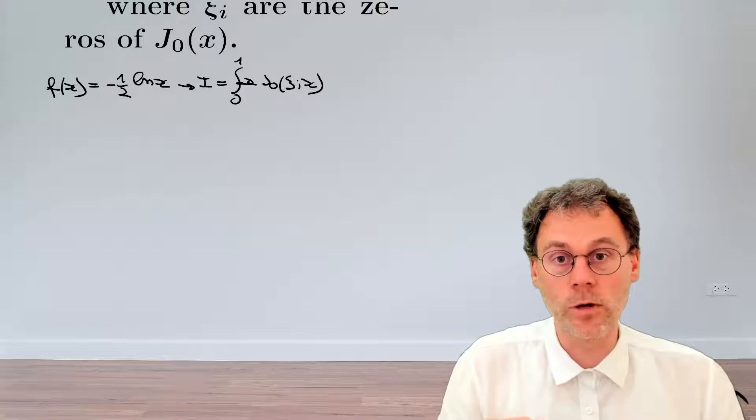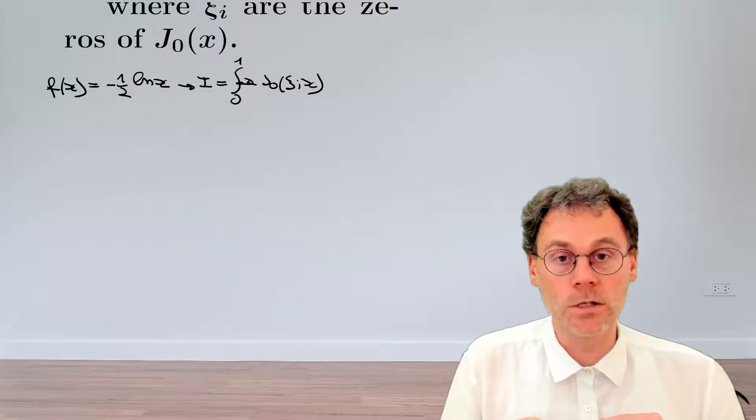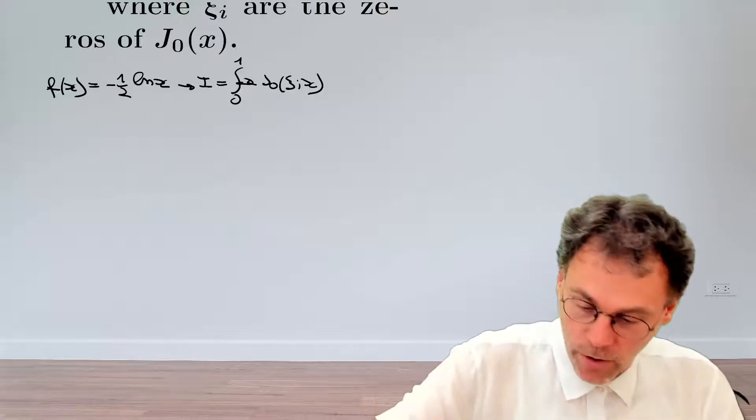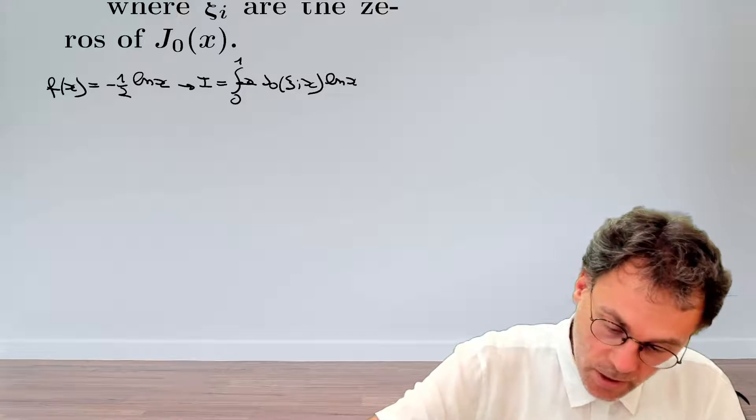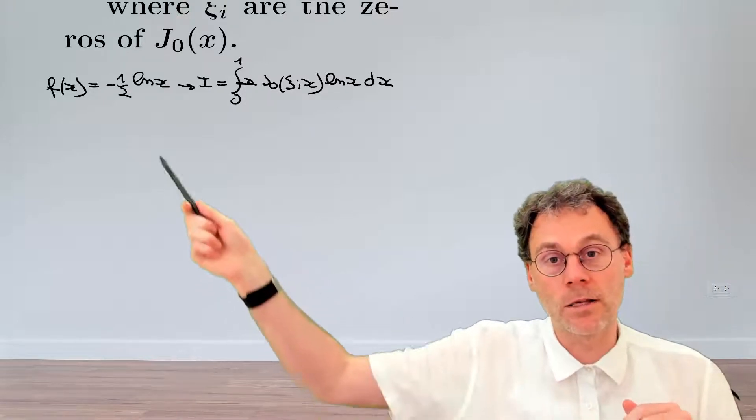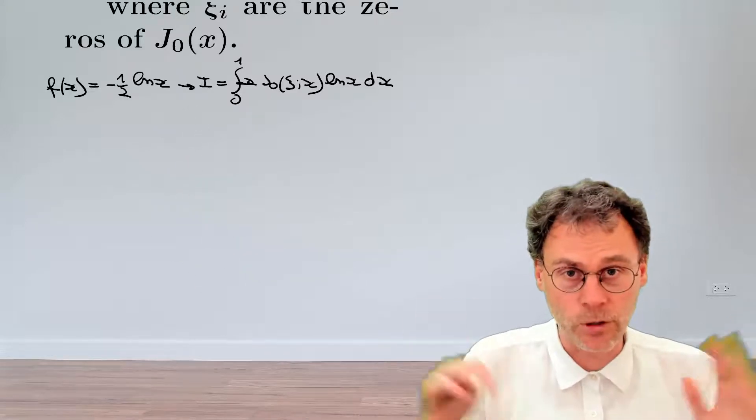And then we multiply by the function that we need to expand. Now, in our case, we're not going to bother about this prefactor minus one half here. You will see that that prefactor is basically there for cosmetic reasons later on, but we're just going to have logarithm of x dx here. And then, of course, we shouldn't forget to bring back this factor minus one half at the very end. But we're not there yet.